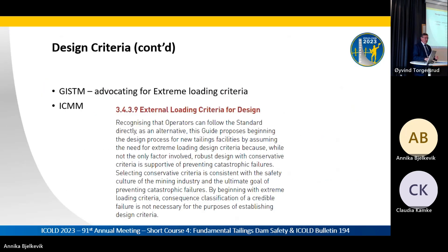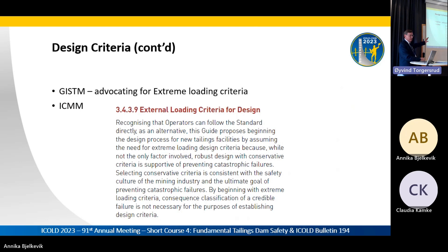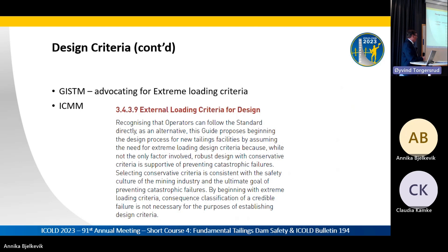Our friends at ICMM have gone to the point of ignoring classification entirely — that's why the good practice guide on tailings management has no discussion of classification. It's all about moving people away from anchoring their design criteria to classification alone. What they wrote is: as an alternative, this guide proposes beginning the design process for new tailings facilities by assuming the need for extreme loading design criteria, because robust design with conservative criteria is supportive of preventing catastrophic failures, and selecting conservative criteria is consistent with the safety ethos of the mining industry.